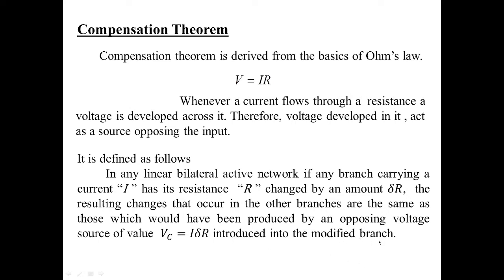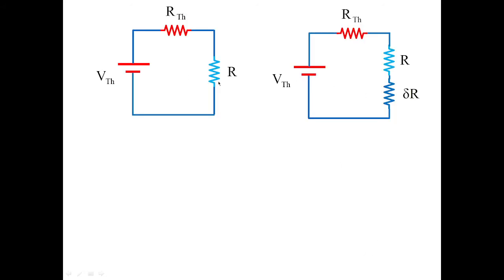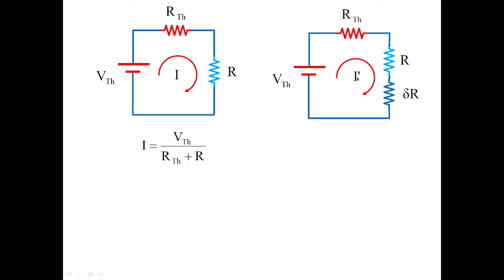To understand this theorem, let me take an example. Here you can see a Thevenin's equivalent voltage with resistance and a load resistance R. Now this R is changed by delta R. Let us see what the Compensation Voltage will be. For this circuit, the original current is I equal to Vth divided by (Rth plus R), and the new current after introducing delta R is I prime equal to Vth divided by (Rth plus R plus delta R).